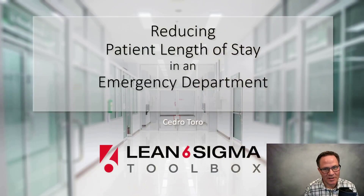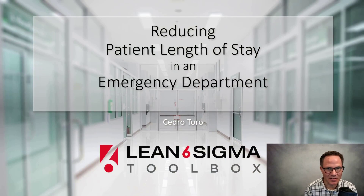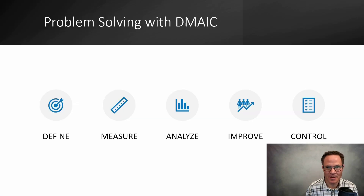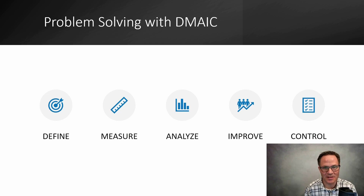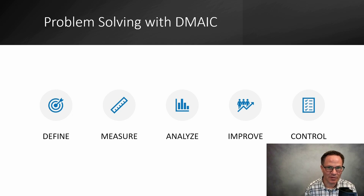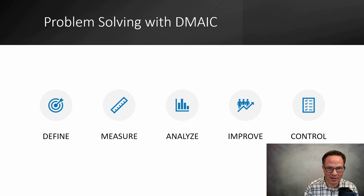We started the reduction of LOS — length of stay — in the hospital project, specifically in the emergency department. To do this project we're following the DMAIC process. You can use PDCA for Lean or DMAIC for Six Sigma. It doesn't really matter as long as you have a structured approach to solving your problem. I really like DMAIC because it makes sense when I teach it to people.